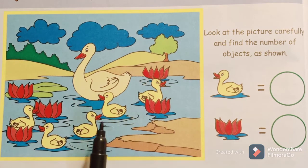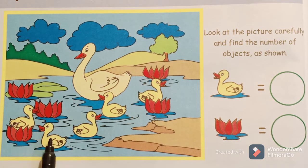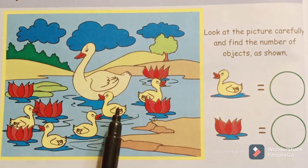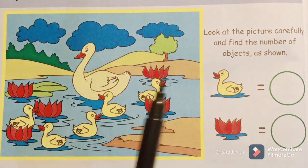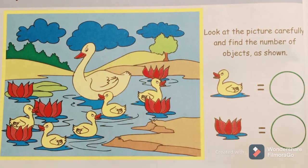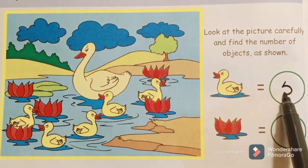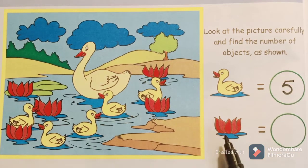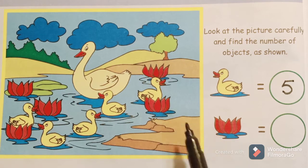Count children: one, two, three, four, and then five. How many ducklings are there? There are five ducklings. Let us write the number five in this space. Now we have to find the total number of lotus flowers present.